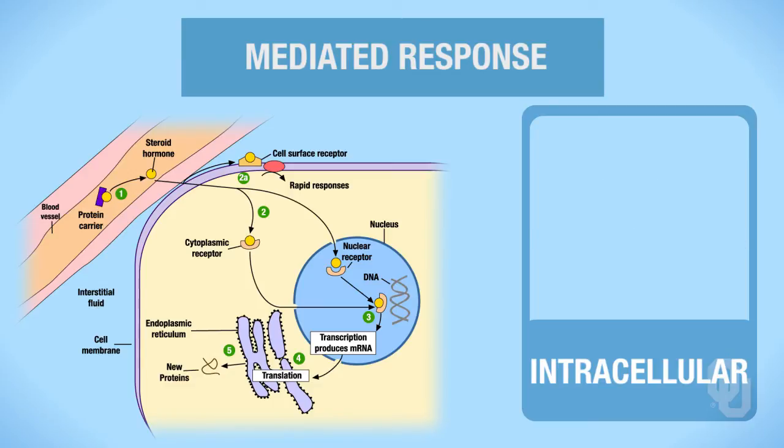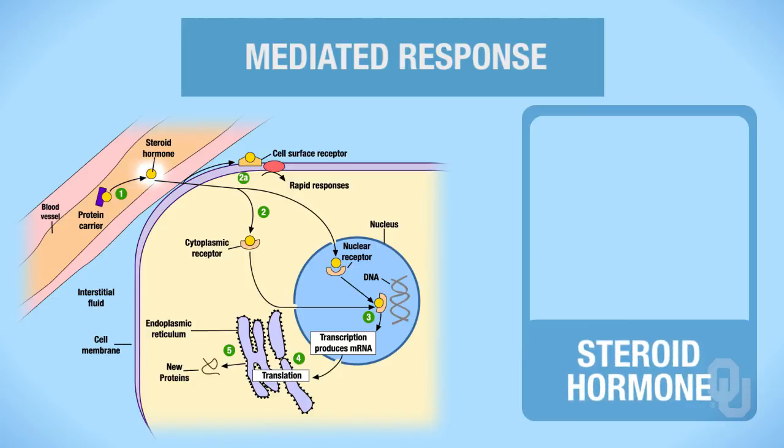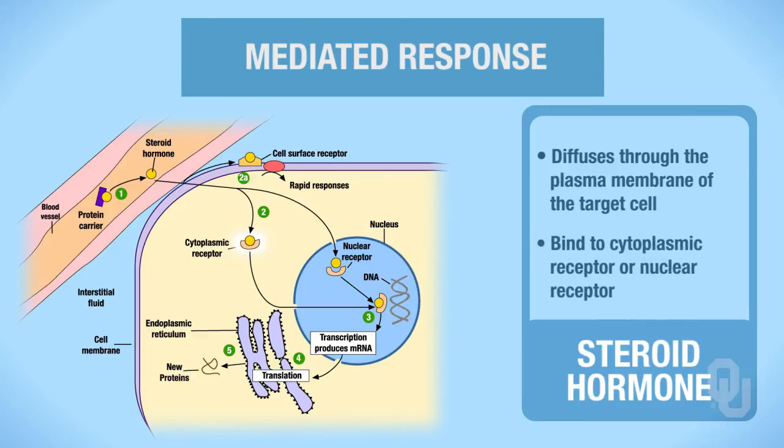Let's start with the steroid hormone that diffuses through the plasma membrane of a target cell. Lipophilic hormones can be freely diffused through the plasma membrane of the target cell, and then they can bind to either a cytoplasmic receptor or a nuclear receptor.